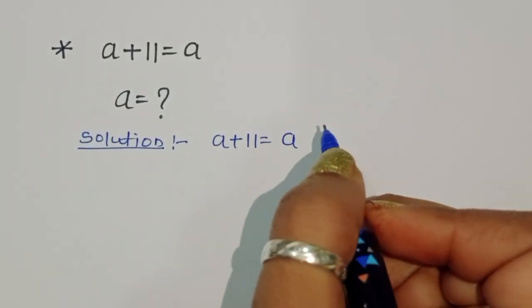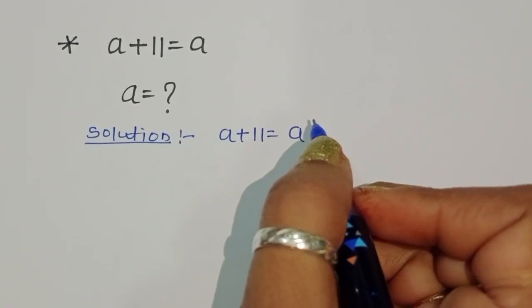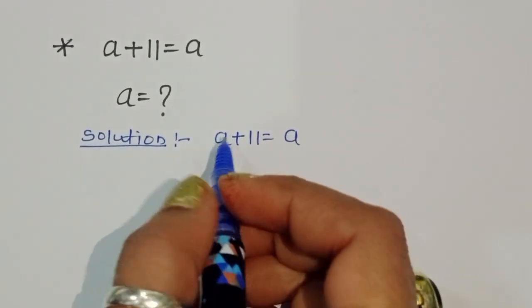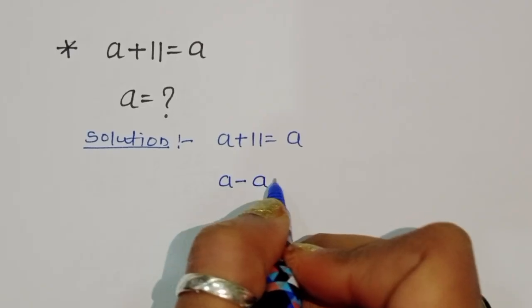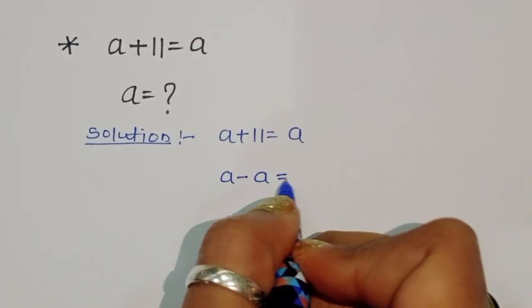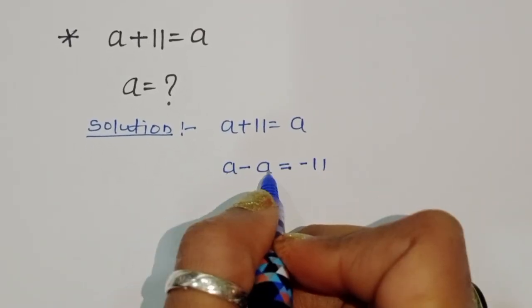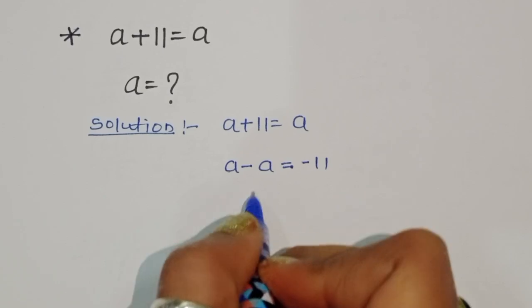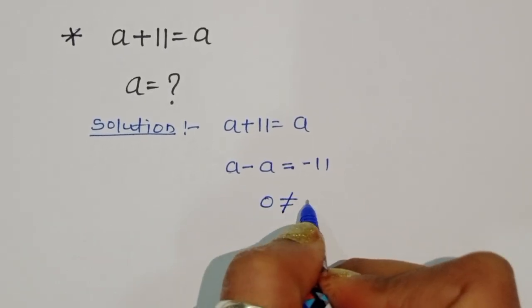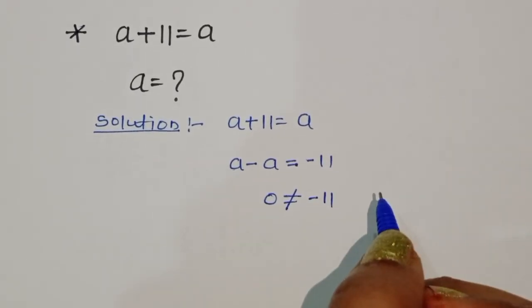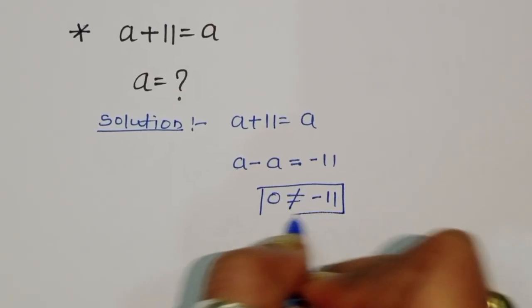From the equation √(a+11) = √a, if we do a minus a it will become 0, which is not equal to minus 11. So this approach is rejected.